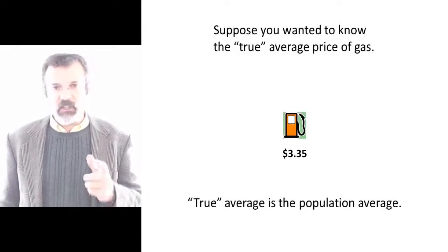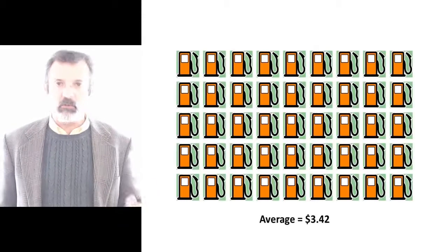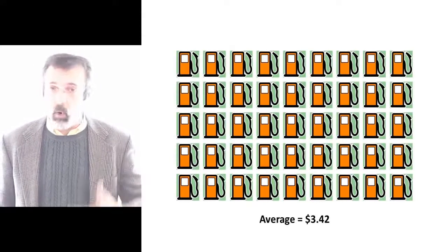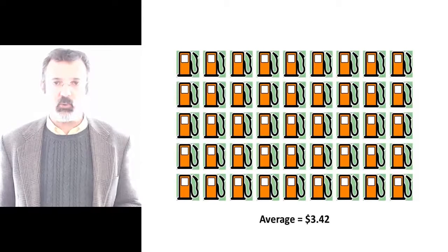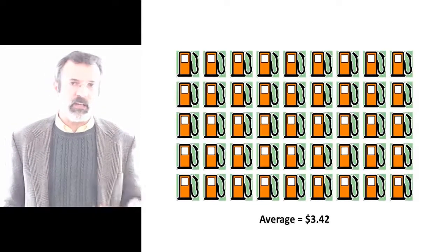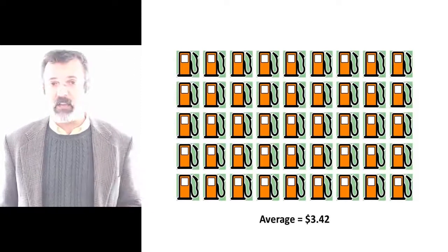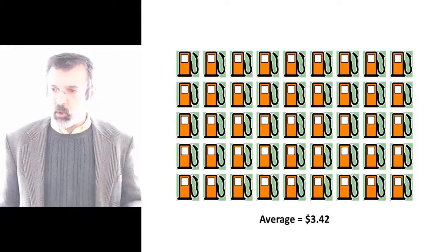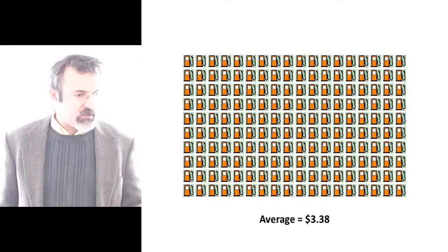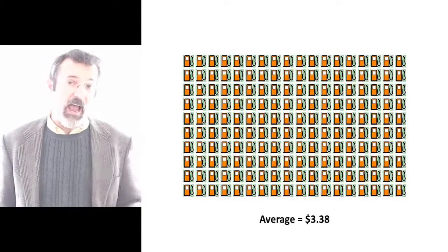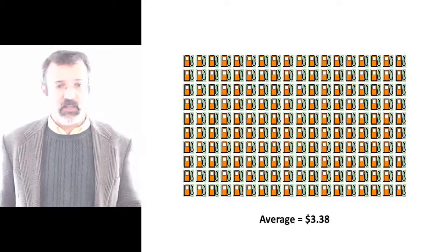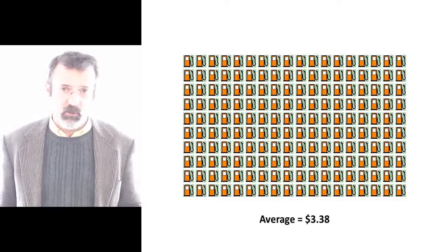So let's go to every gas station in our neighborhood and observe the price of gas. We see that the average price among all the gas stations in our neighborhood is $3.42. But we know this can't be the true average price of gas because there are lots of other gas stations we haven't looked at. So suppose we go to every gas station in the entire city and look at the price of gas at each one — these average out to $3.38. But this still isn't the true price of gas because there are other gas stations throughout the state that we haven't observed.